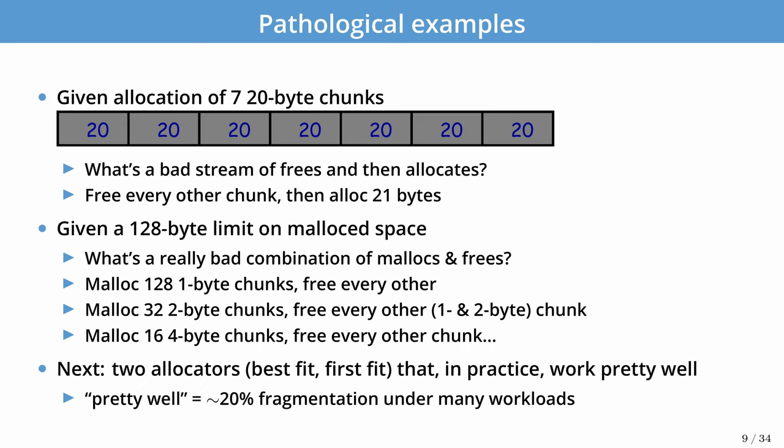In the next part, we'll look at the best fit and first fit allocators that in practice work pretty well. In most workloads, these strategies require about 20% fragmentation. We're going to look at two basic strategies for allocation that are often building blocks for more complicated algorithms — the best fit and first fit strategy. In practice, pretty well here means approximately 20% fragmentation under many workloads.